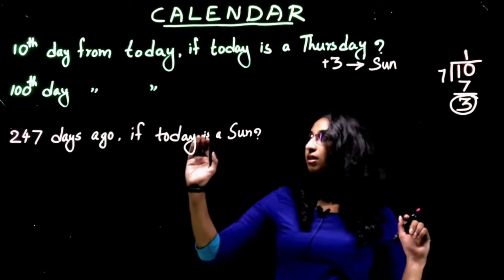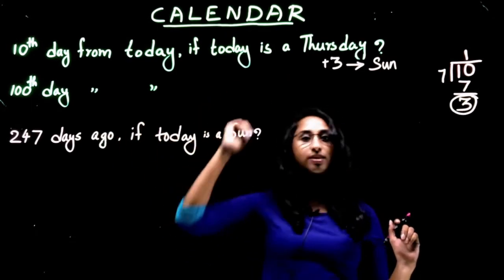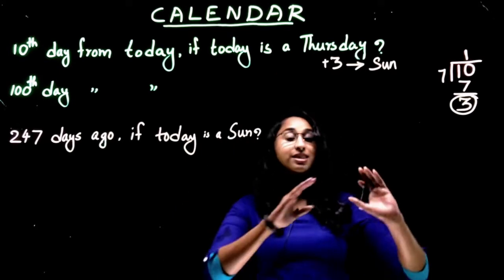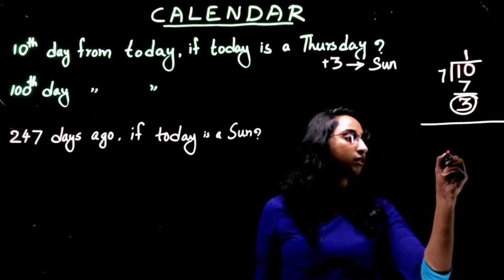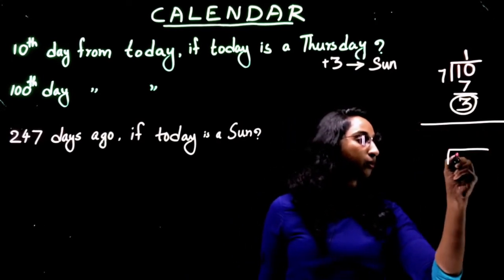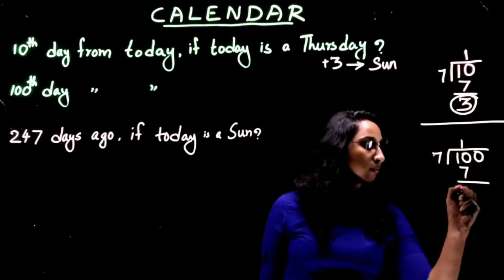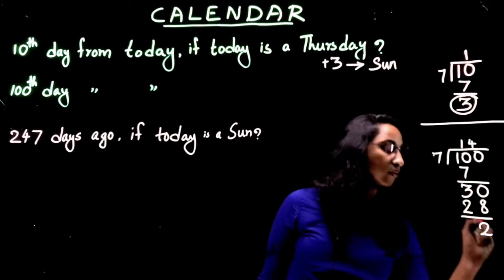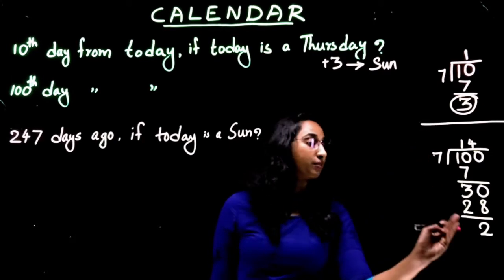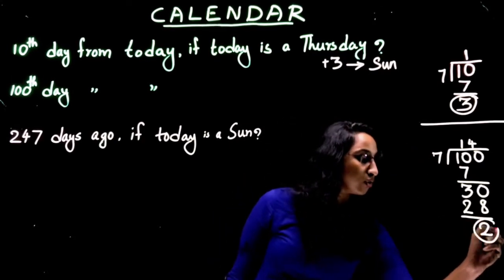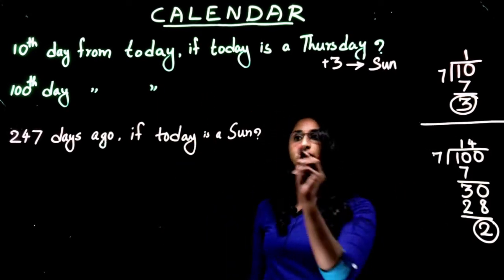Second one: find the hundredth day from today if today is Thursday. We have to use the same method. Divide this hundred with seven. Two. So in hundred days there is complete 14 weeks plus two days, so here it is two odd days.